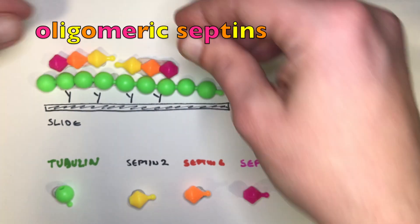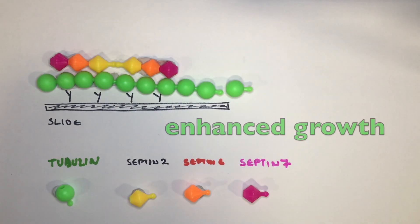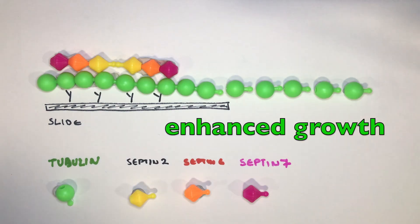Oligomeric septin 2, 6 and 7 complexes enhance the growth of microtubules and help microtubules to grow longer.